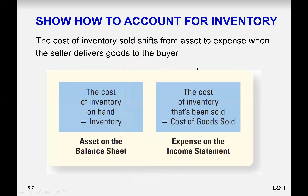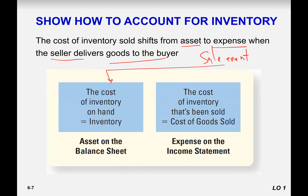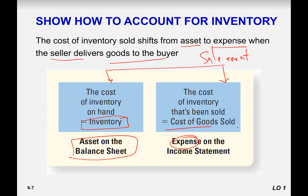The cost of inventory sold shifts from an asset to an expense when the seller delivers the goods to the buyer. Whenever a sale happens, it affects two accounts: sales increase and inventory decreases. The sale event changes the assets on the balance sheet and also changes the amount of income and expenses on the income statement. The decrease in inventory is expensed on the income statement.